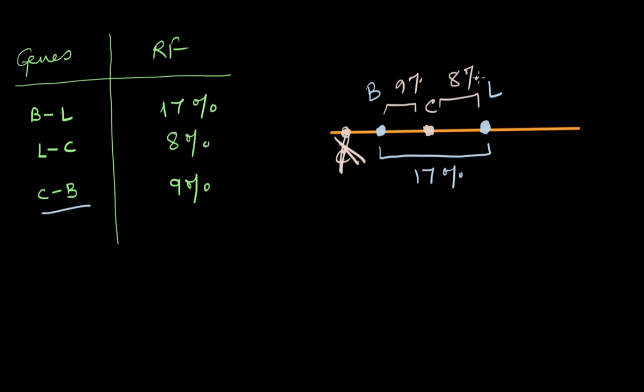This is how you can effectively map an entire chromosome, which is basically what Sturtevant and Morgan had done all those years ago. You need multiple RF values in order to find out the gene order. Today we don't use these methods anymore because we have more accurate, faster ways of sequencing a whole genome, which tell us exact locations rather than approximate values. But the underlying principle remains the same, which is why Morgan, Sturtevant, and their entire team are known as the pioneers of gene mapping.